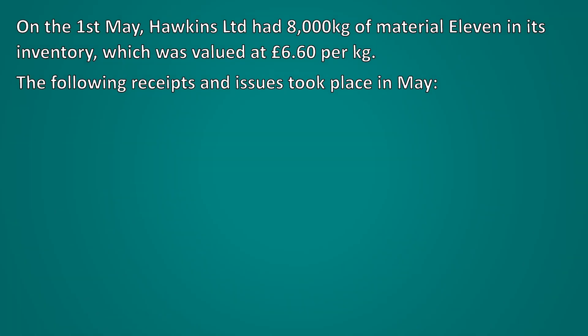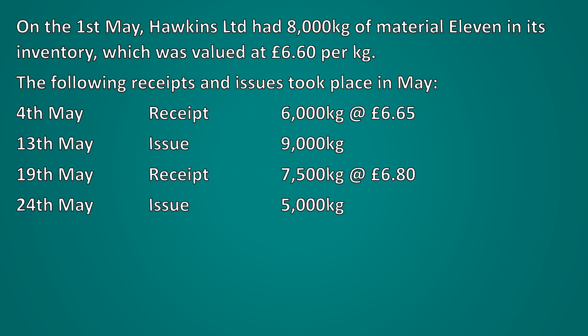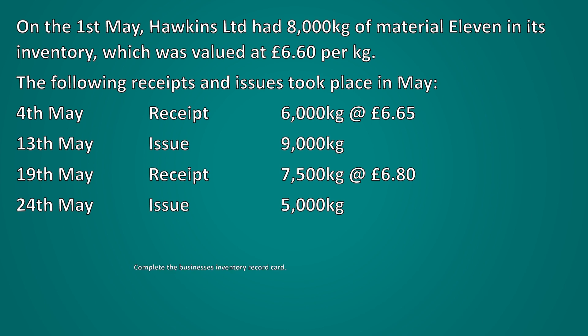Using this template, let's have a look at how to value inventory based upon the weighted average cost method. On the 1st of May, Hawkins Limited had 8,000 kilograms of material 11 in its inventory, valued at £6.60 per kilogram. The following receipts and issues took place in May — complete the business's inventory record card.